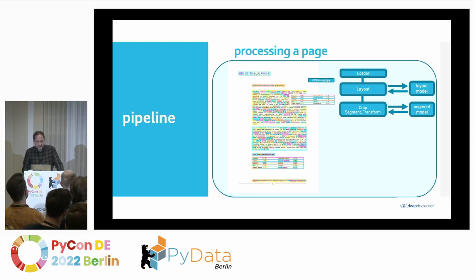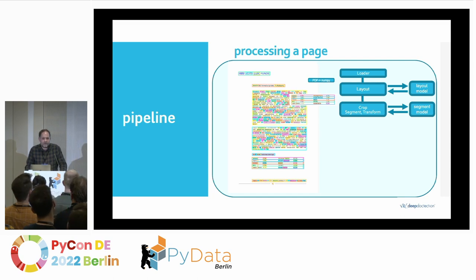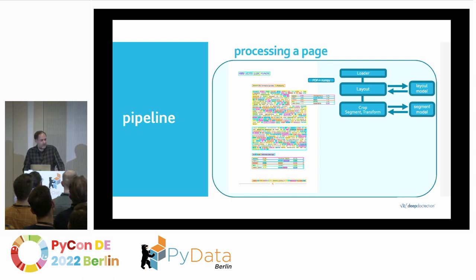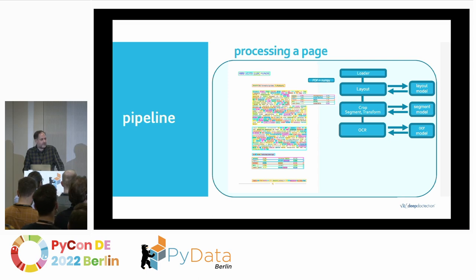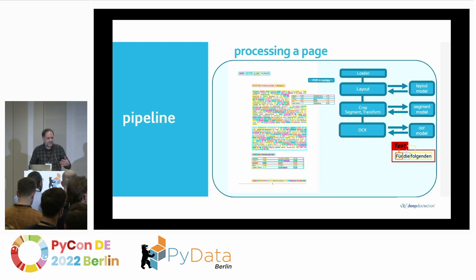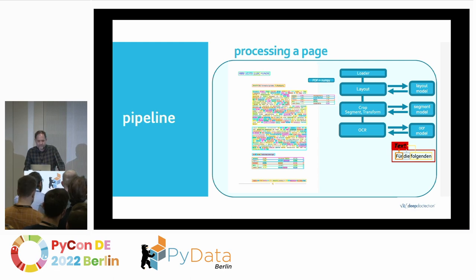The next step involves extracting text. This can be an ordinary OCR approach, though in the case of PDF documents you don't really need OCR very often — you can just rely on PDF miners, for example. Once you've extracted the text, you need to create some sensible structure out of it. At this point, you only have text bounding boxes.